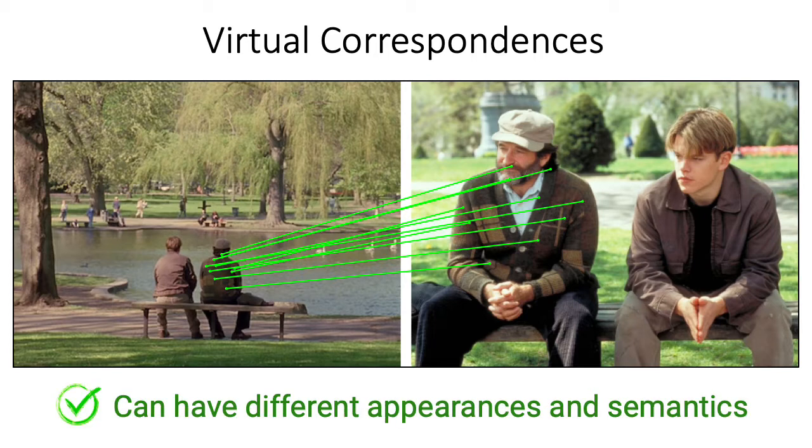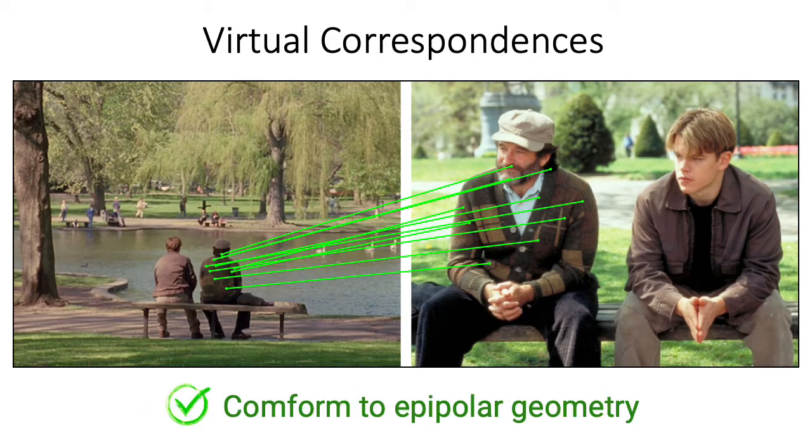Virtual correspondences can have completely different appearances and semantics. For instance, a head pixel on the left is associated with a nose pixel on the right. Most importantly, virtual correspondences conform to epipolar geometry, which allows us to integrate them seamlessly with existing 3D algorithms.